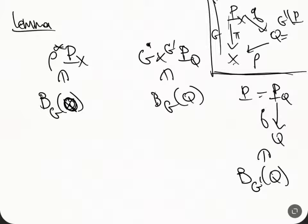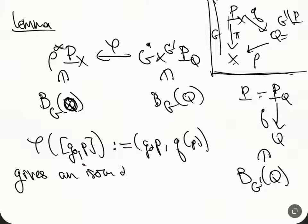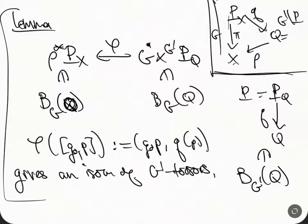So what I can do is: I have this one, I can extend it to the full group, or I can pull back this part to Q. It turns out there's going to be a map between these, and that this is an isomorphism. φ of (g₀, p) — the coordinates are p's and g₀'s, related by the G' action — is defined to be g₀ of p, then take the quotient of p. This gives an isomorphism of G'-torsors.